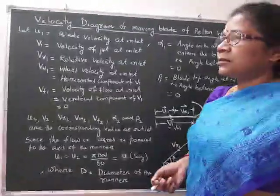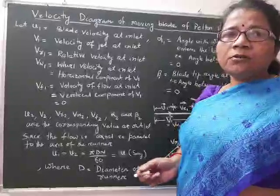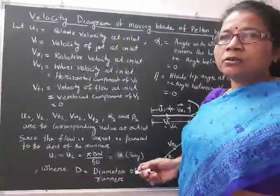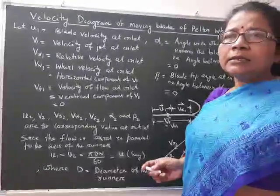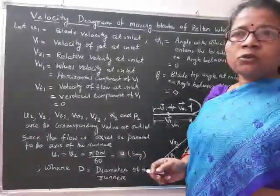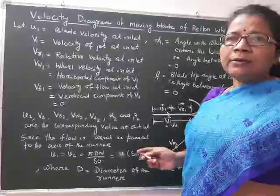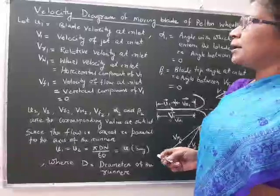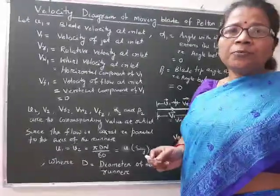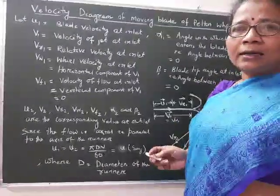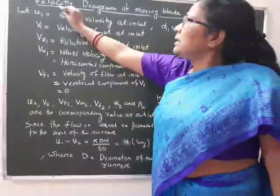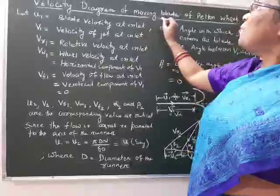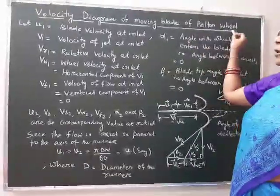Good morning students. In the last video, we discussed the construction and working principle of the impulse turbine, that is the Pelton wheel. Now we have to derive the work done in this Pelton wheel or Pelton turbine. Before deriving the work done, we have to understand the velocity diagram of the moving blade of the Pelton wheel.